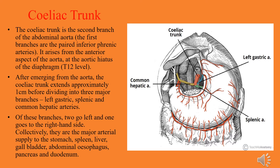The first branch of the abdominal aorta is the inferior phrenic artery and the second branch is the celiac branch. The celiac trunk arises at T12 level, the aortic hiatus of the diaphragm, and extends approximately 1 cm before dividing into three major branches: left gastric, splenic, and common hepatic arteries.